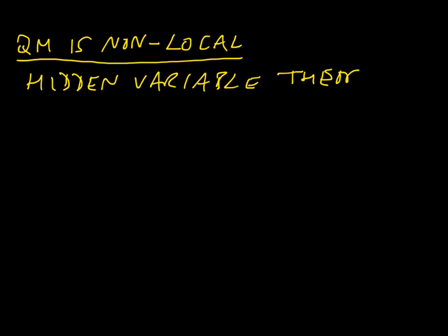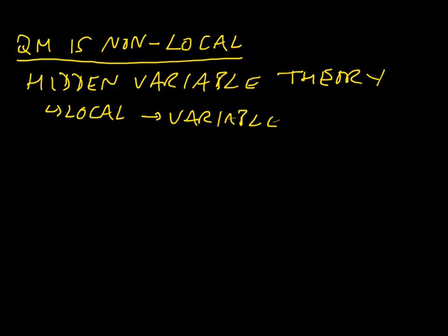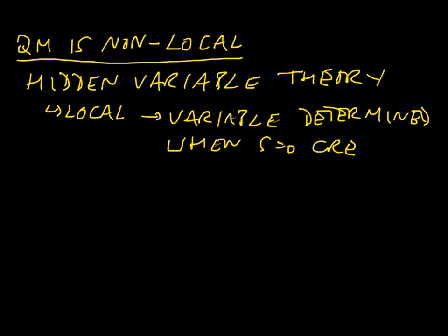The idea behind a hidden variable theory is that the probabilities of quantum mechanics that we observe are actually controlled by some variable we don't know about. The key point is whether that should be a local or a non-local variable — those who find quantum mechanics unsatisfying insist that a hidden variable theory should be local. This is where Bell comes in. The local variable would be one that was determined when the singlet system was created, and that is what controls the results of the measurements.